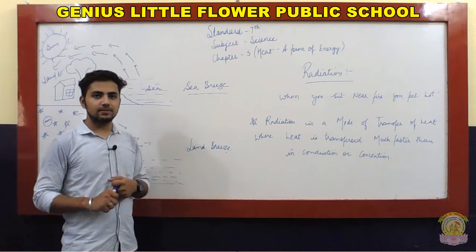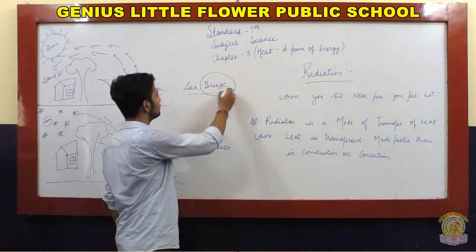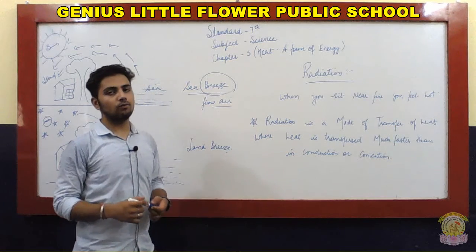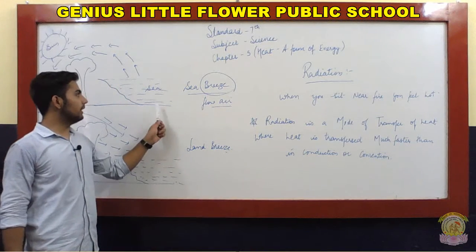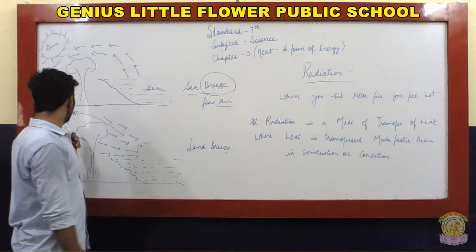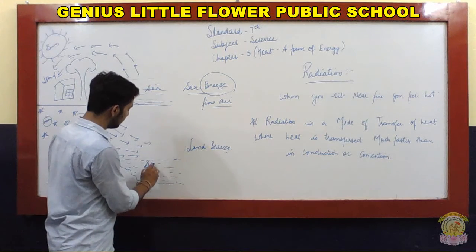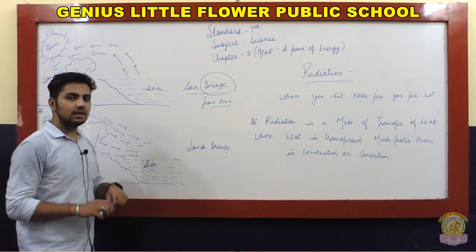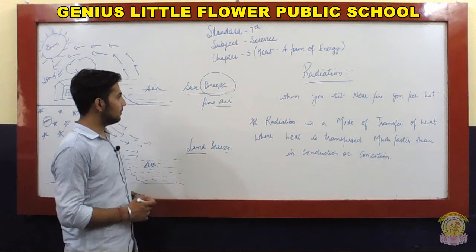The last use we studied was land and sea breeze. Breeze is generally the flow or movement of air from one place to another. If air is blowing from sea to land, it is called sea breeze. When it flows from land to sea, it is called land breeze — named after the place from which it originates.